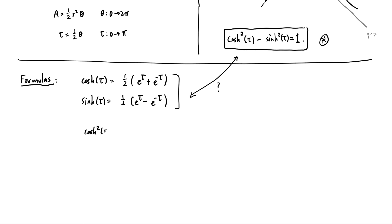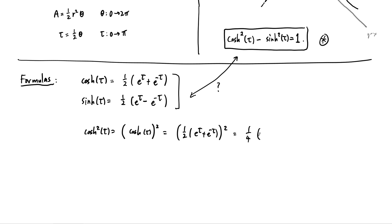Let's start with cosh squared tau - this means square the whole formula. So this is one-half times the quantity e to the tau plus e to the minus tau, all squared. This equals one-fourth, and then foiling: e to the tau squared gives e to the two tau; e to the tau times e to the minus tau gives e to the zero, which is 1, and there are two copies, so plus two; and then plus e to the minus two tau.